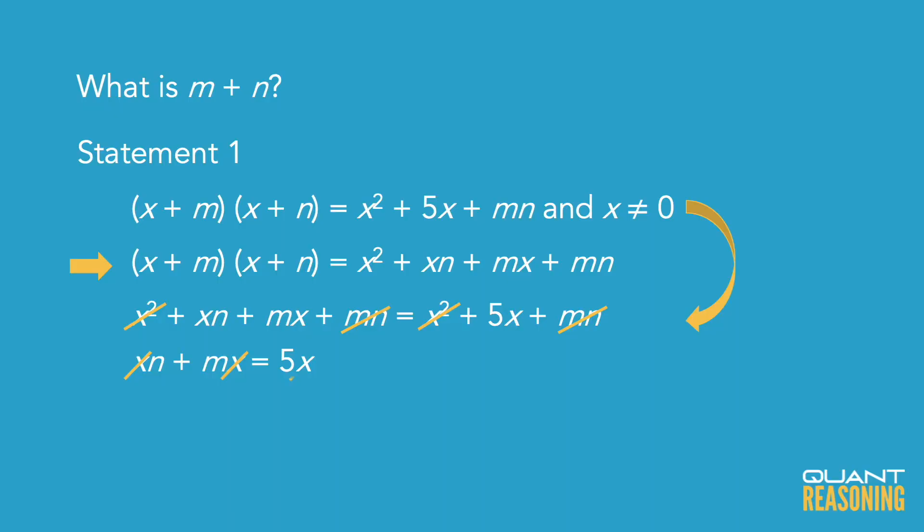So now I can tell, even though I don't know the value of m and I don't know the value of n, their sum must be five. And therefore statement one on its own is sufficient to answer the question, and the correct answer is A.